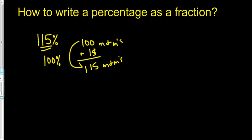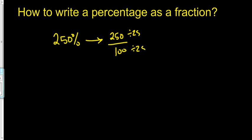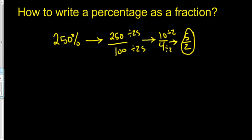So 115% of 100 M&Ms is 115, written as the fraction 115 over 100. Now, how do we write 250% as a fraction? You still put it over 100, giving 250 over 100. Then you simplify — both can be divided by 25: 100 divided by 25 is 4, and 250 divided by 25 is 10. Then divide both by 2: 10 divided by 2 is 5, and 4 divided by 2 is 2. So the simplified fraction is 5 over 2.